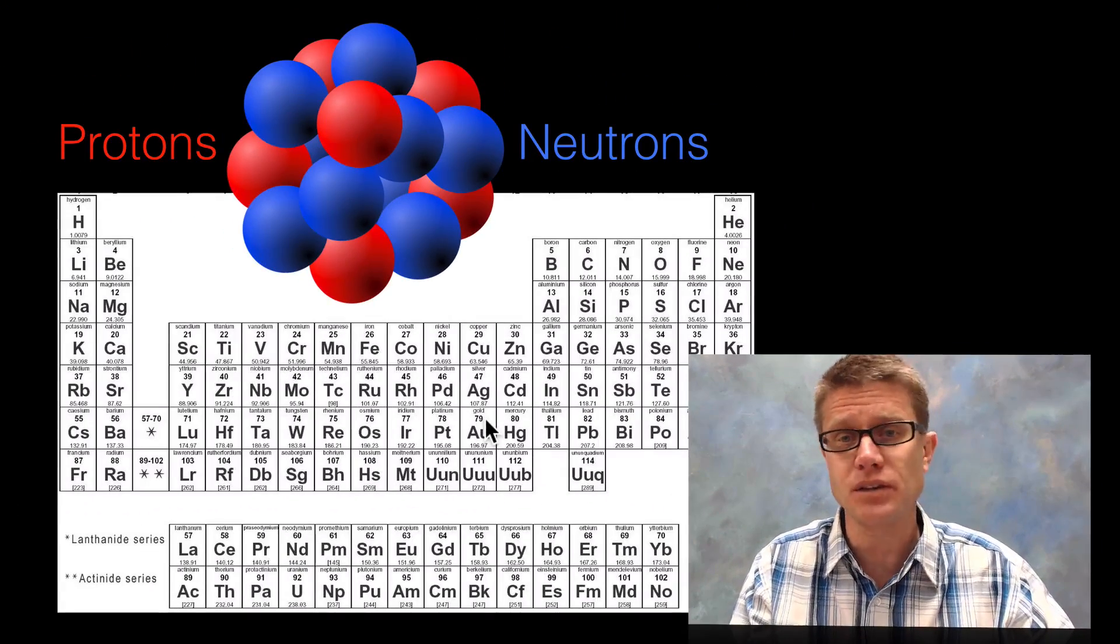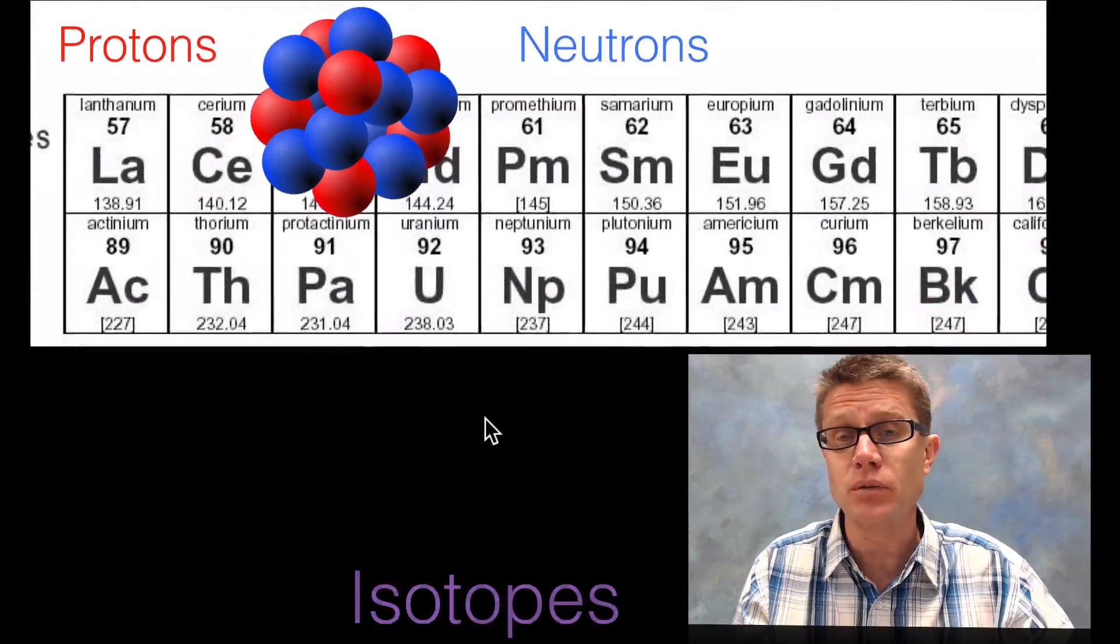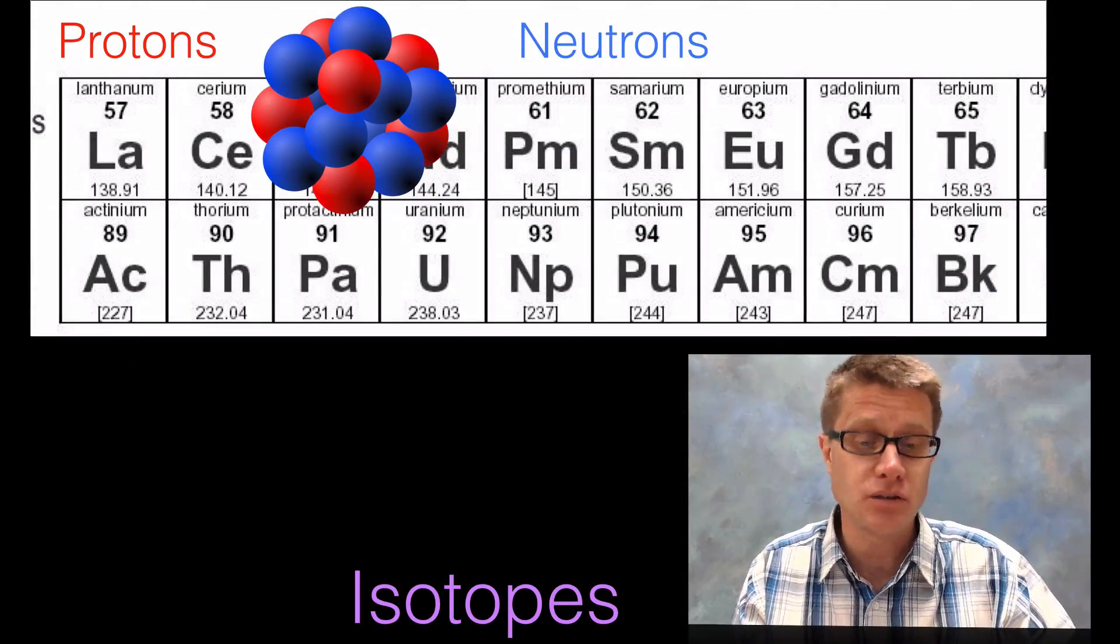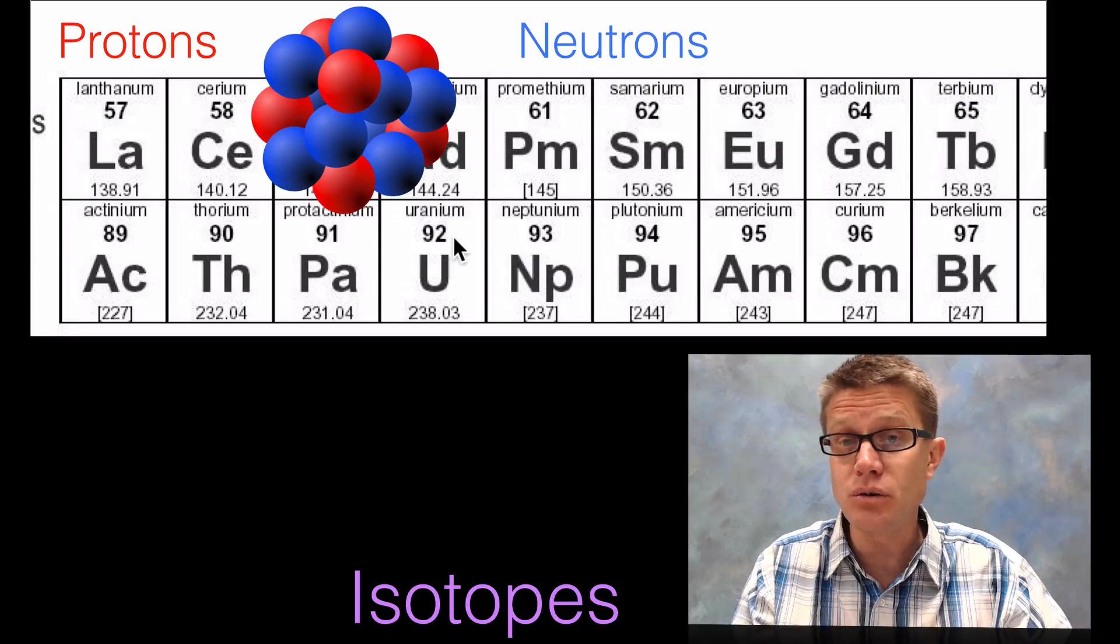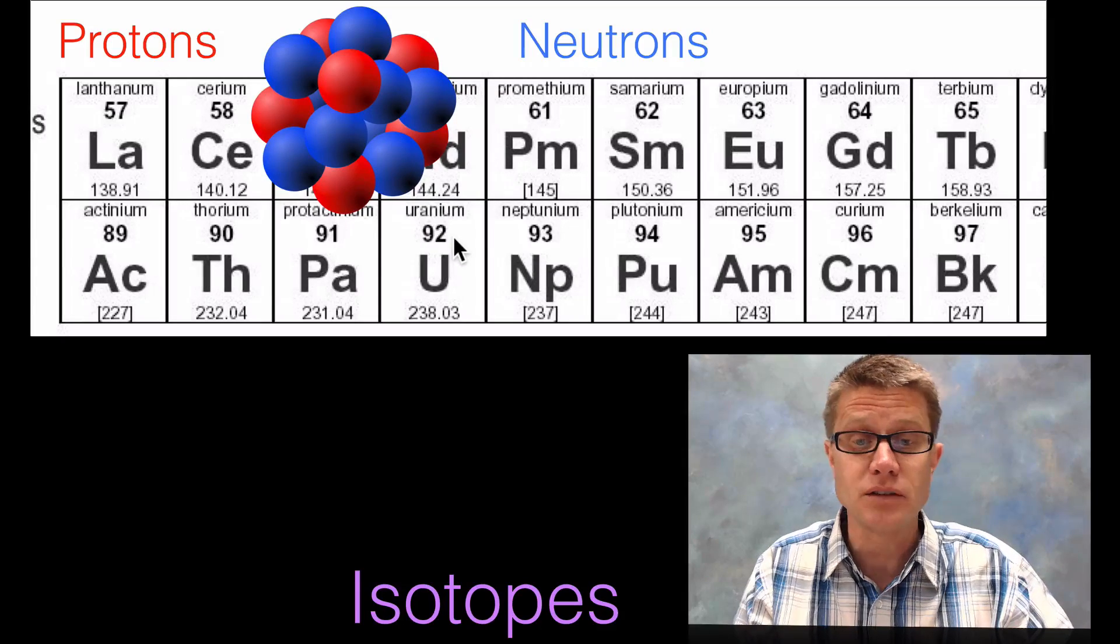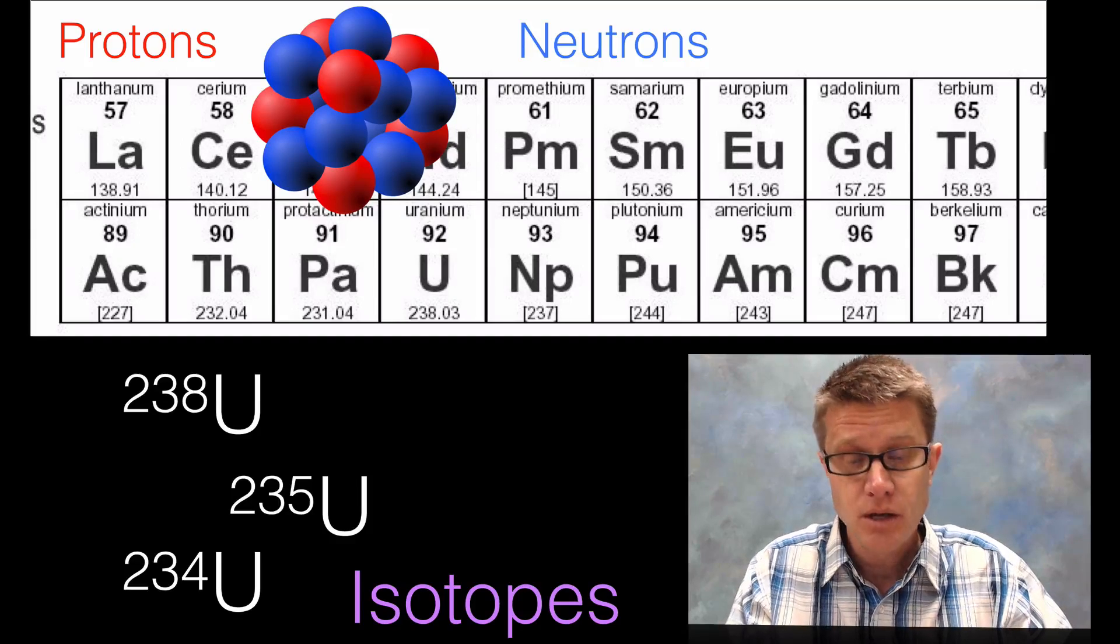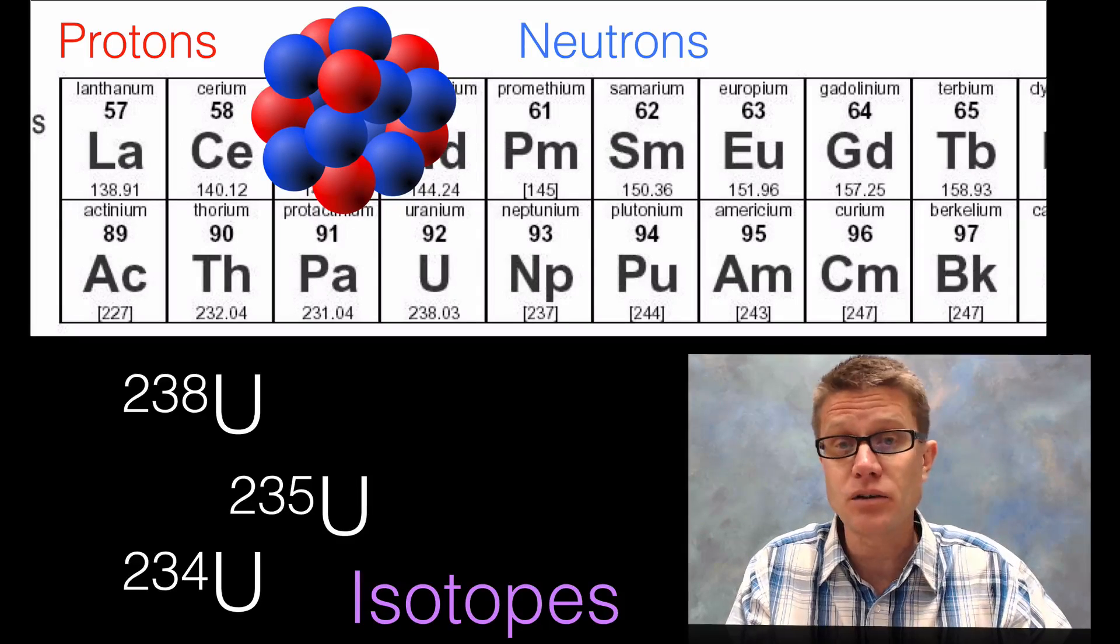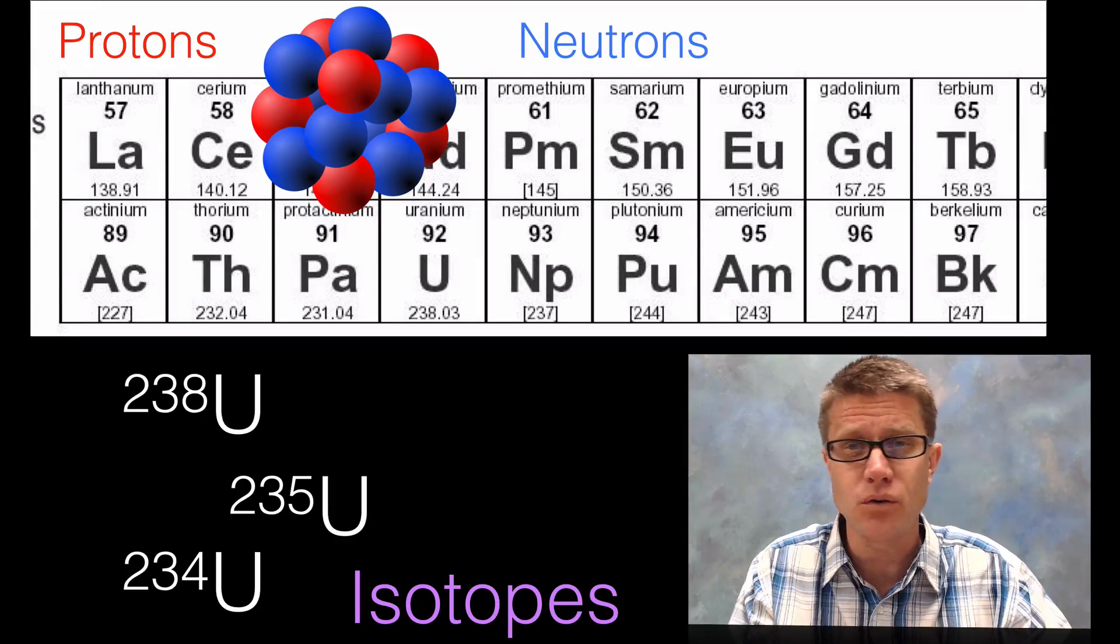But you can have atoms of the same element and varying numbers of neutrons and when we do that we create something called an isotope. And so if we look low on the periodic table we find uranium 92. That means it has 92 protons. But there are going to be 3 naturally occurring isotopes on our planet. Uranium 238 is going to have 146 neutrons. Uranium 235 will have 143 and uranium 234 will have 142.